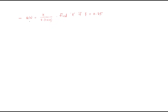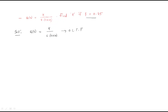Hello everyone. In this session we will discuss some problems. The first problem is G(s) = K / [s(s+10)]. Find K if zeta equals 0.25. If you observe this, this is the open loop transfer function K / [s(s+10)].